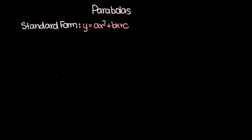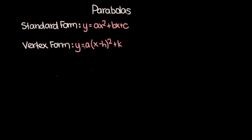In the last video, we talked about the standard form of a parabola: y is equal to ax squared plus bx plus c. Now let's discuss the vertex form of a parabola, which is y is equal to a times x minus h whole squared plus k. In vertex form, a serves the same purpose as it does in standard form. You can use it to determine whether your parabola opens upward or downward, and you can also use it to find the focal distance.